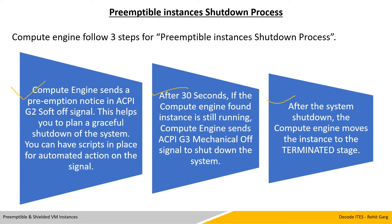In step 2, in case the machine is still running and you don't have scripts in place, it will give your machine 30 seconds to wind off, and after that it will send a mechanical off — meaning a hard stop for your system. Once your system is shut down, it will automatically move to terminated stage so that no extra cost will occur for these machines.